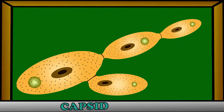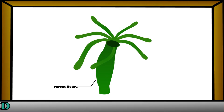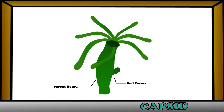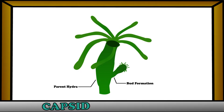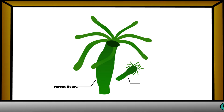Let's have a look at another example of budding — how budding takes place in hydra. In hydra, the formation of buds takes place, which on getting a suitable environment and conditions develops, and after complete development gets separated from the parent hydra. The separated hydra is known as young hydra.